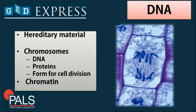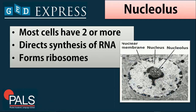The DNA is also found in the nucleus. It contains hereditary material and the chromosomes, as well as the necessary proteins needed for cell division, such as chromatin. Most cells have two or more nucleoli, and the nucleolus directs synthesis of RNA, or ribonucleic acid. This is also necessary for cell division, and the nucleolus is essential because it forms the ribosomes.